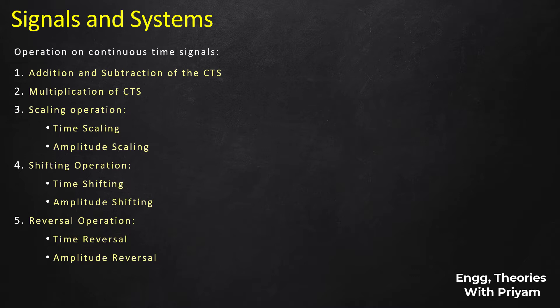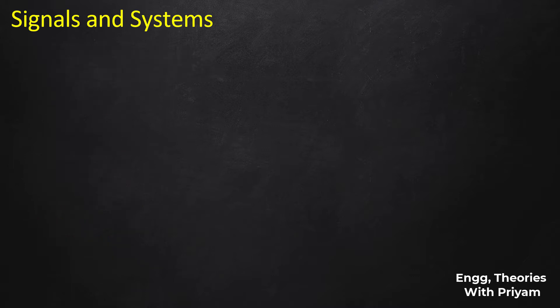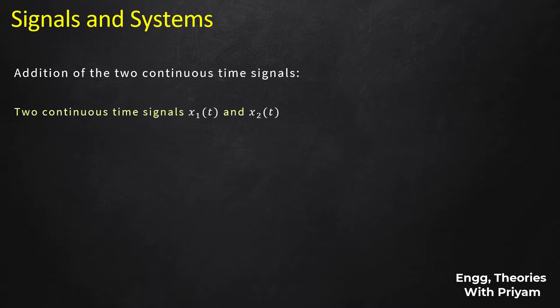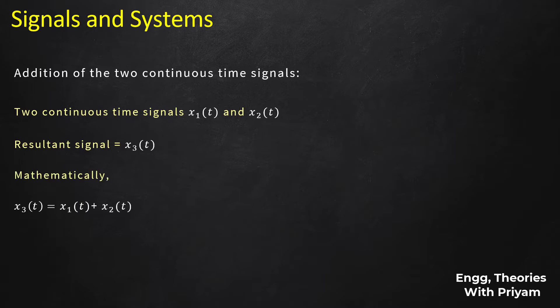In this lecture we are going to see addition, subtraction, and multiplication of the continuous time signal (CTS). We know that the continuous time signal is defined for every instant of time, so the addition, subtraction, and multiplication of two or more continuous time signals can be obtained by performing the corresponding operations at every instant of time. For addition, we take two continuous time signals x1(t) and x2(t), and the resultant signal is x3(t) = x1(t) + x2(t). This addition must be done for every instant of time.